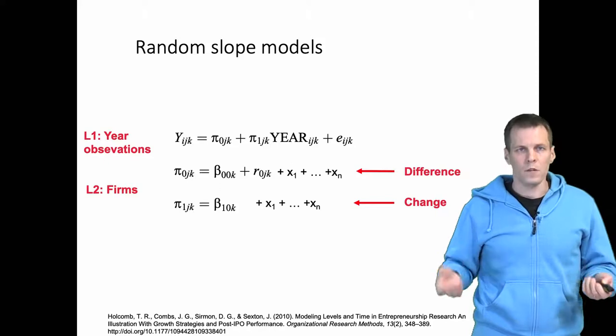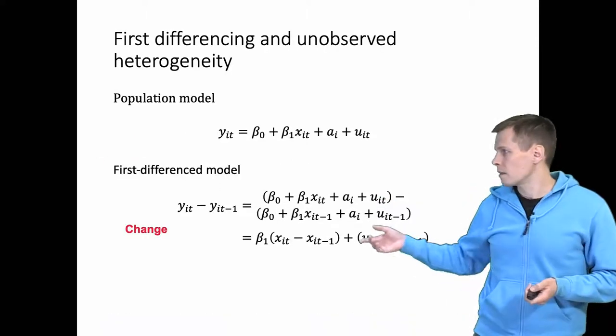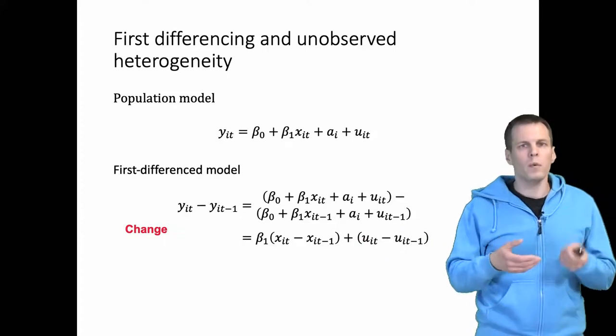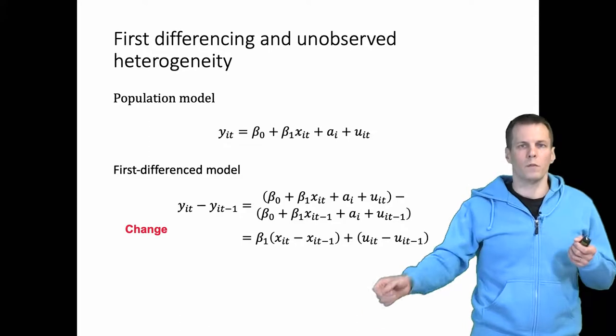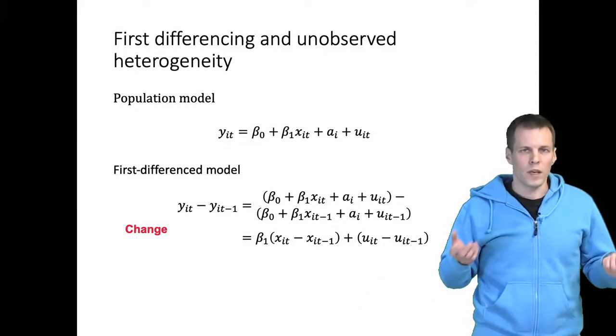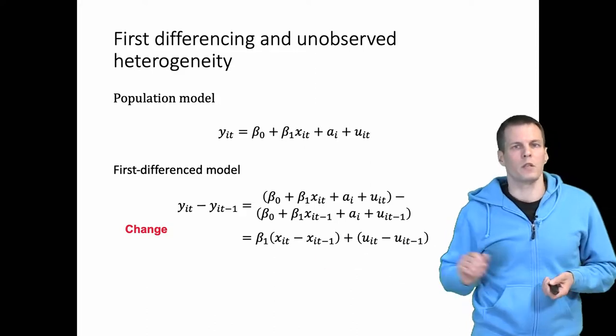In first differencing and fixed effects estimation, we only get the change. When we take the unobserved differences out from the data, then we can't say anything about differences because we take the differences out. We only get estimates of change.